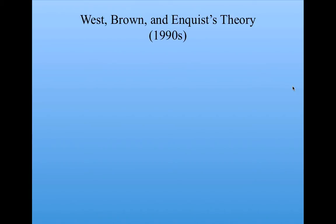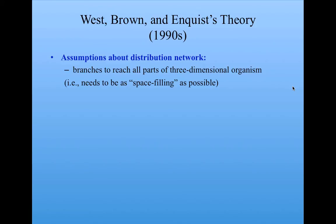West, Brown, and Enquist developed a theory that they called metabolic scaling theory to explain the scaling relationships seen in the data. Their theory involved some assumptions about distribution networks, whether they be airways in the lungs or the vascular system bringing blood to cells. The idea is that these distribution networks have a fractal tree-like structure with branches that reach all parts of the three-dimensional organism. They have to be as space-filling as possible to optimally deliver nutrients to all parts of the body, to all cells.